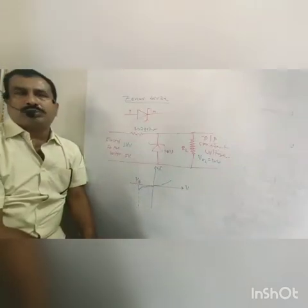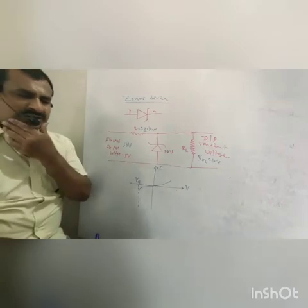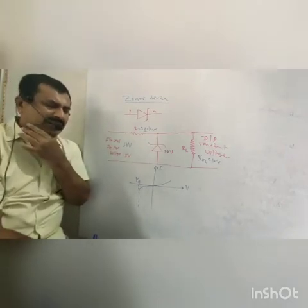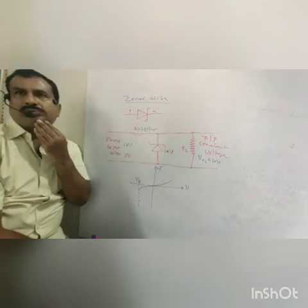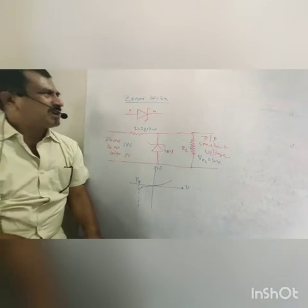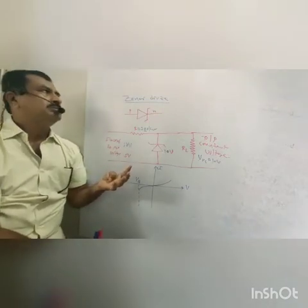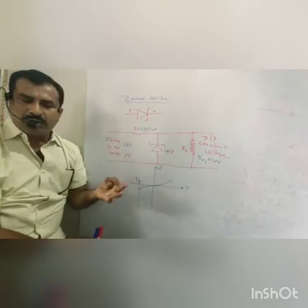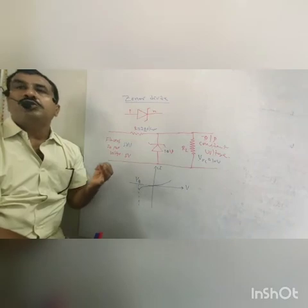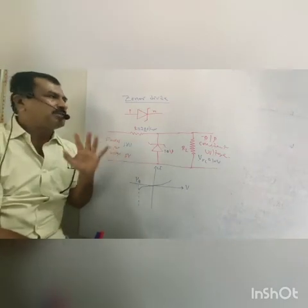Semiconductor crystal diode. The junction between P-type semiconductor and N-type semiconductor is nothing but the diode. Different types of diodes are there: general diode, light emitting diode, photodiode, and solar cell.